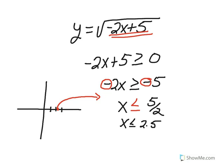Being careful that when we divide by negative 2, we remember to switch the direction of the inequality. When you divide by negative 2, x is less than or equal to 5 halves, which means x is less than or equal to 2.5.